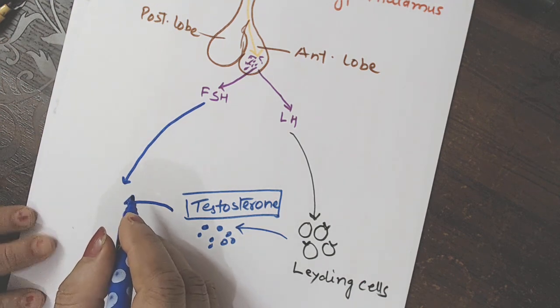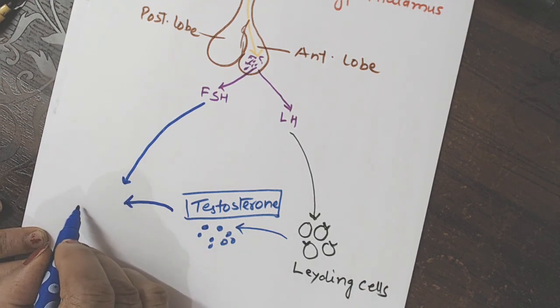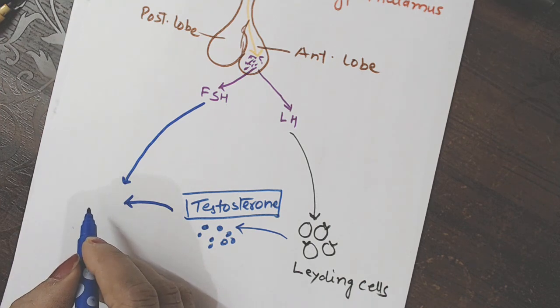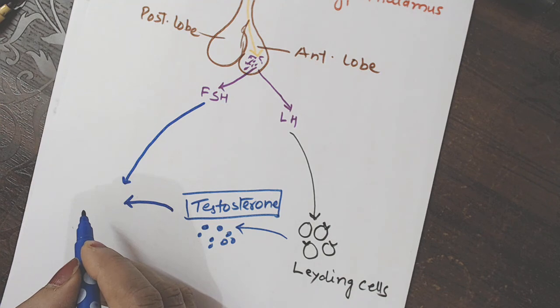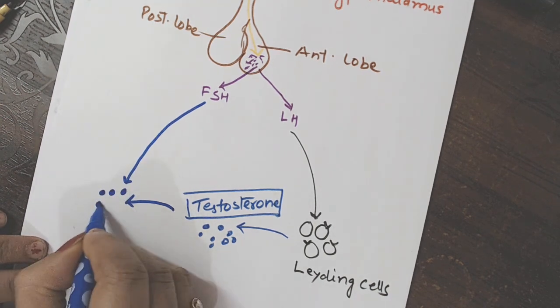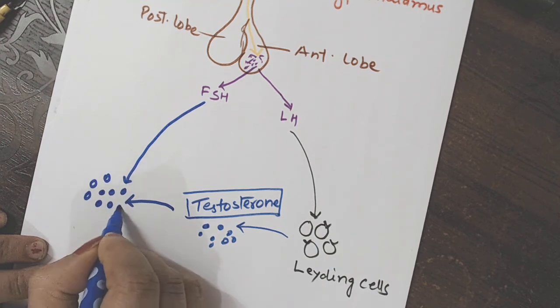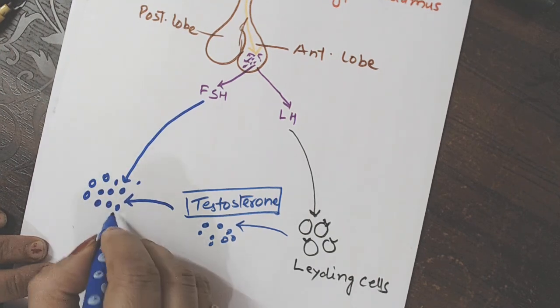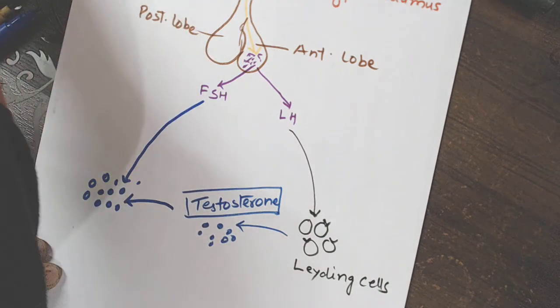Is that clear? Toh yahaan kaun kaun si cells hongi aapki? Sertoli cells. FSH kis ko kar raha hai? FSH yaani ki follicle stimulating hormone. Toh ye honge hamare Sertoli cells. Main confuse nahi karne ga.